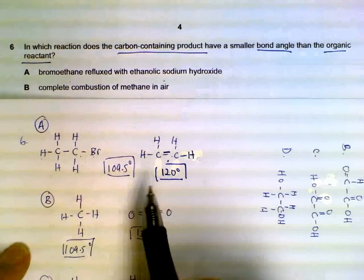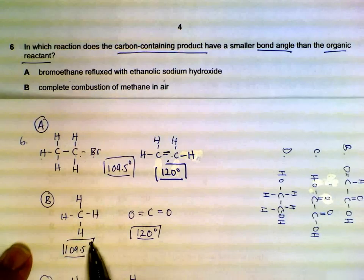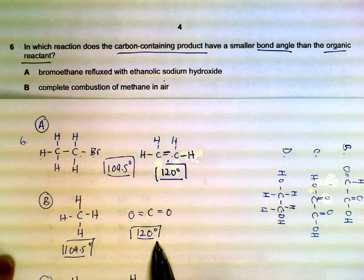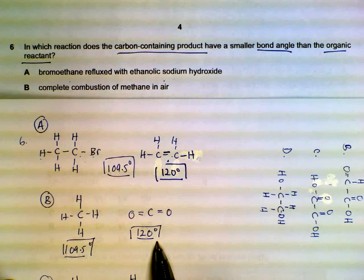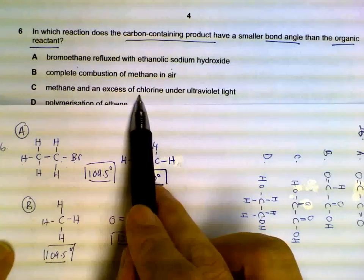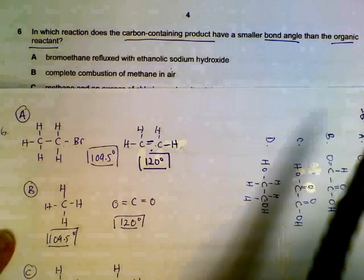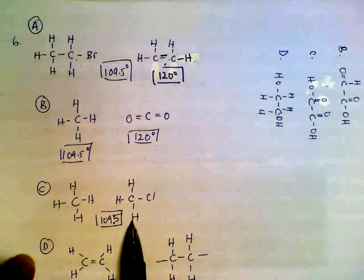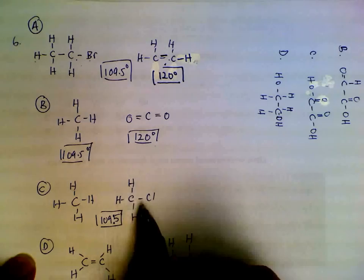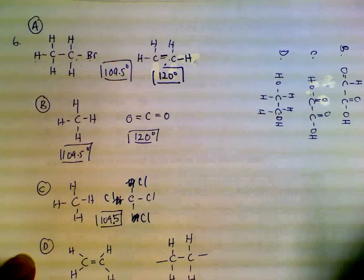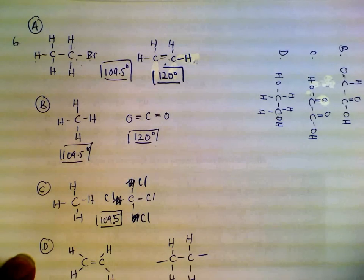Complete combustion of methane - methane tetrahedral again, carbon dioxide linear, so 109.5 to 120. Methane and excess chlorine - what we have will be a substitution reaction. Methane and chlorine excess, even if we do replace all of them, the hydrogen, both are still tetrahedral, so they have the same angle.